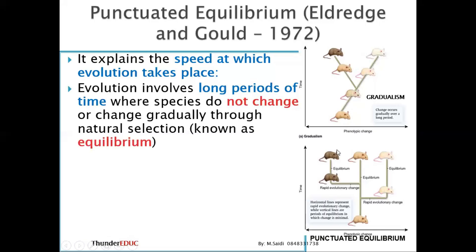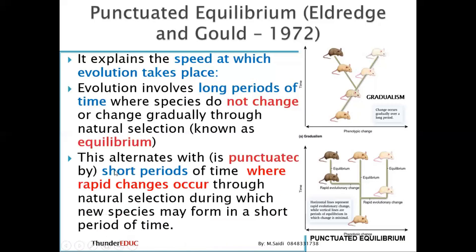During the equilibrium phase, from this point to this point, the organisms are the same — they are not changing. This equilibrium alternates with what we call the punctuated phase: short periods of time where rapid changes occur through natural selection, during which new species may form in a short period of time. So from this point to this point, rapid change happens, and new species can form within a short period of time.